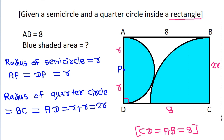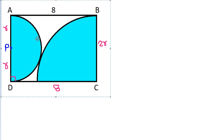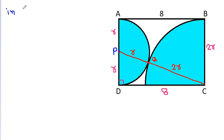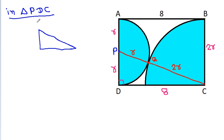Now, if we join PC, suppose this intersection point is Q. Then PQ is the radius of the semicircle, that will be R, and CQ is the radius of the quarter circle, that is 2R. So PC equals PQ plus CQ equals R plus 2R, which is 3R. In triangle PDC, this angle at D is 90 degrees, PD is R, and PC is 3R.